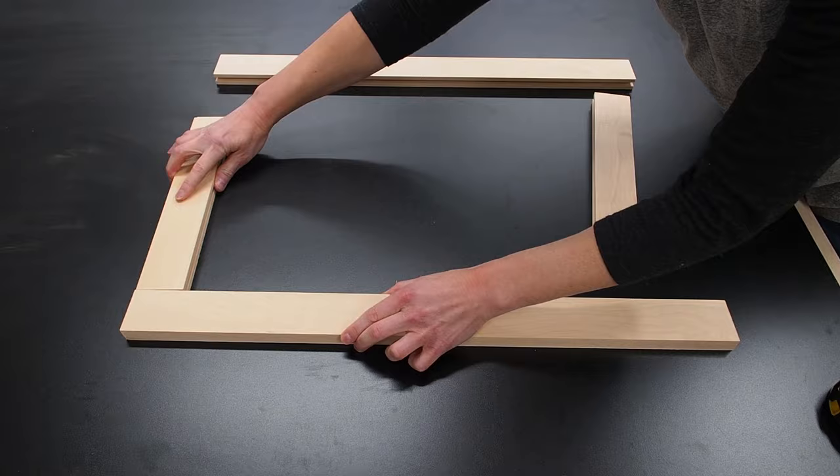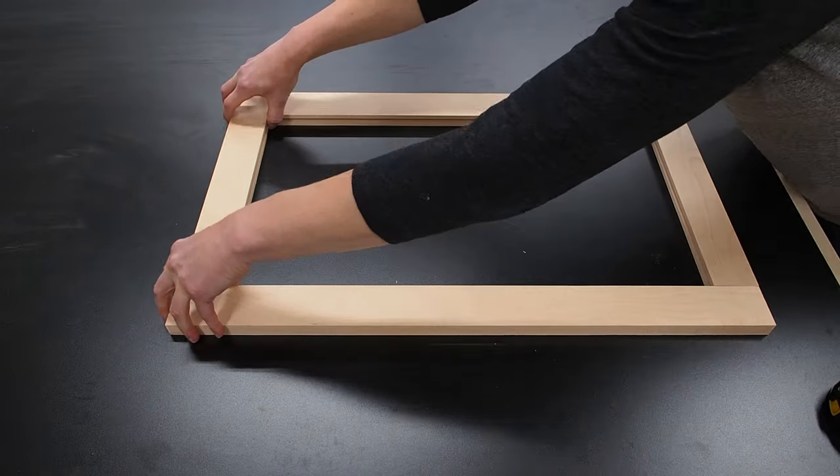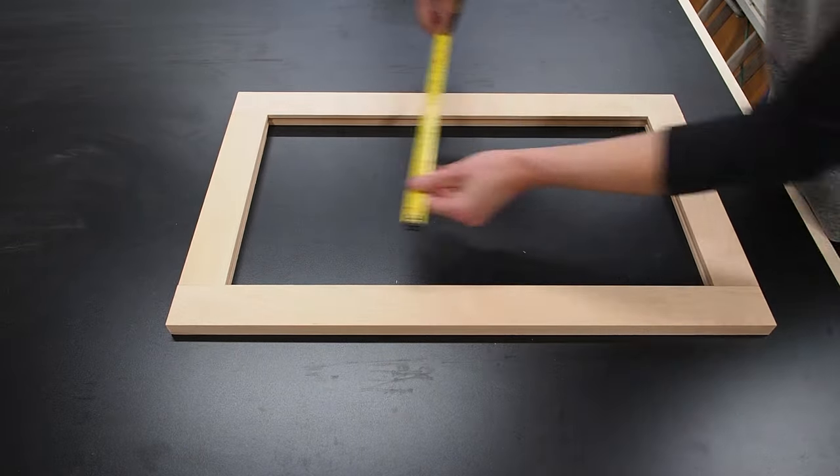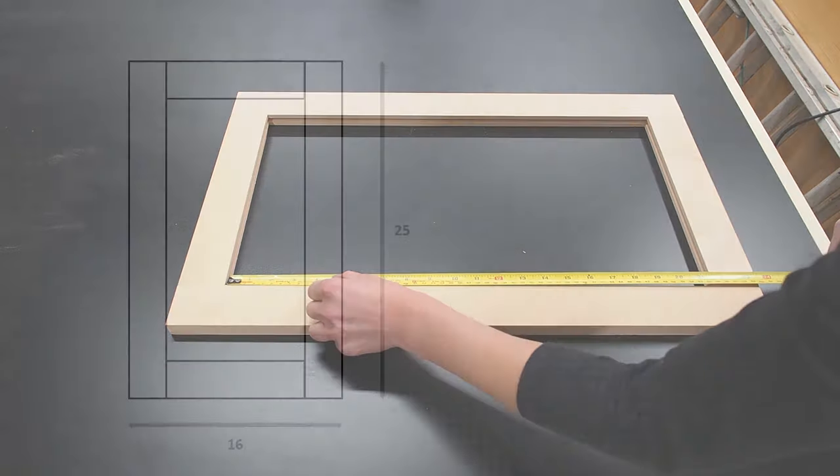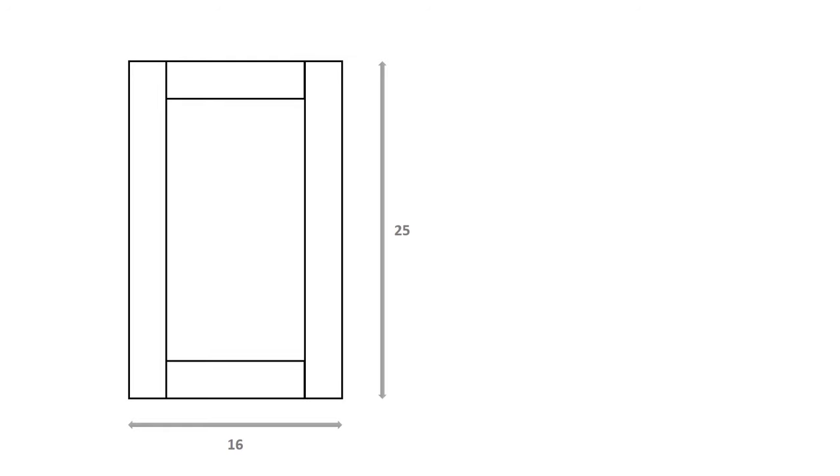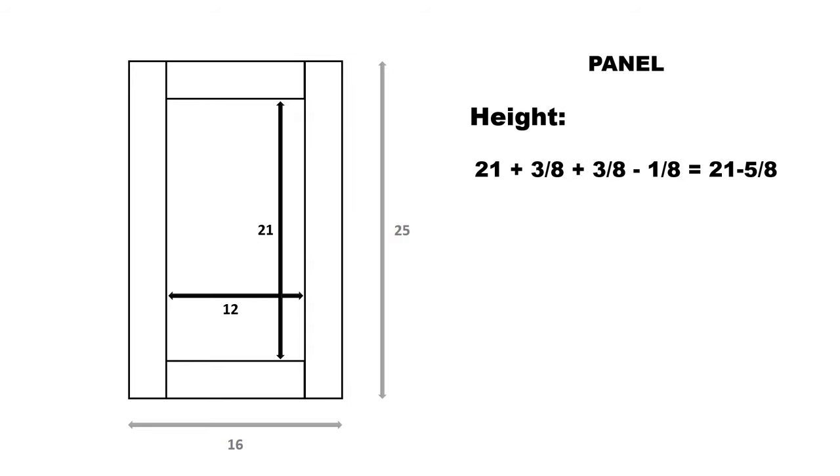Next I need to cut the center panel to size. And in order to figure out how big I need to cut it, I assembled the frame and measured the inside of the frame. And now, time for a little more math. So back to my example from before, the inside of my frame measures 12 inches wide by 21 inches tall. So to calculate the height of the panel, I'll simply use my measurement of 21 plus 3 eighths to account for the groove in my top rail, and the same for my bottom rail. I'll then remove an eighth just to give me a little wiggle room. That gives me a panel height of 21 and 5 eighths. The calculation for the width is essentially the same.